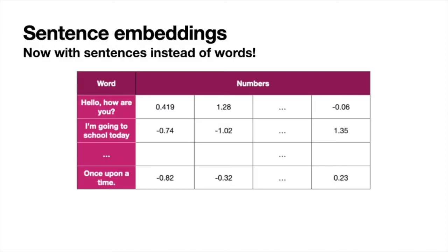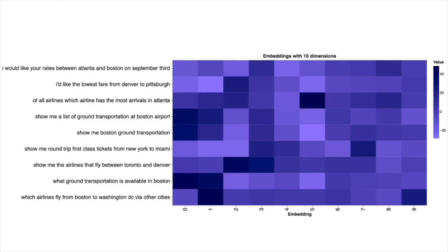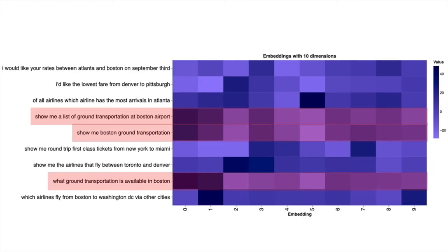That was for words — but what about sentences? We can do the exact same thing. There are sentence embeddings which associate each sentence with a bunch of numbers. Here the Cohere embedding has 4096 numbers per sentence. I'm going to show you the first 10 entries of the embedding as shadings rather than actual numbers. Notice that some phrases here are very similar — for example, three of them all talk about Boston ground transportation at the airport — and if you look at the shadings, you can see the numbers are very similar.